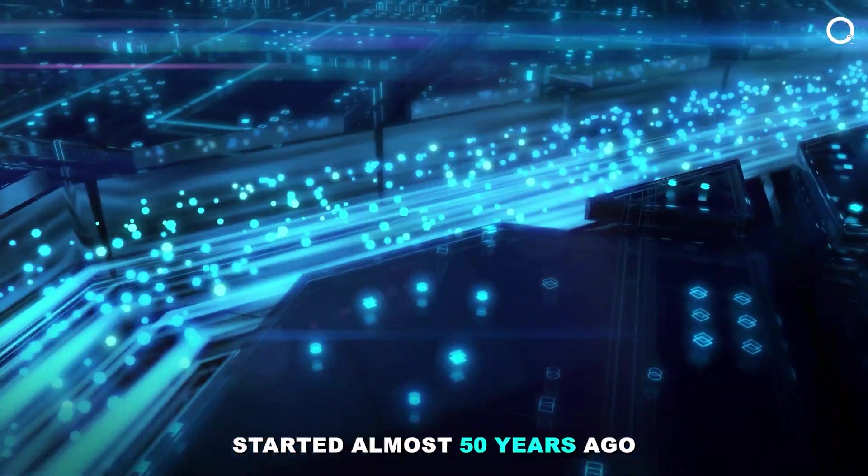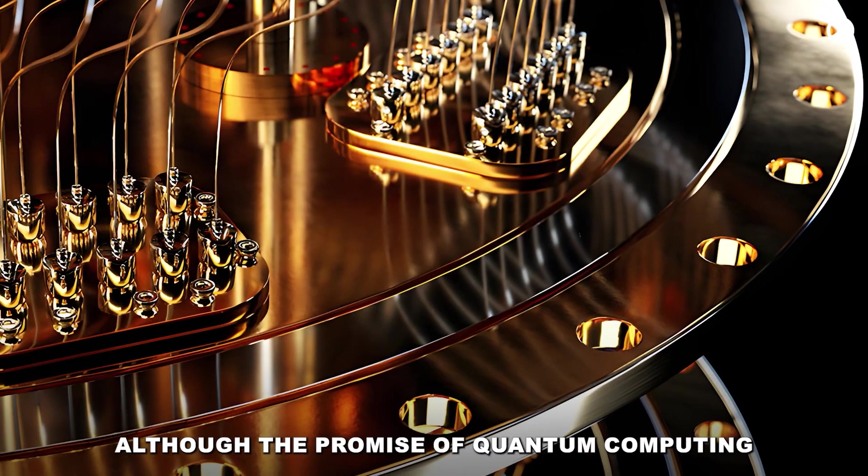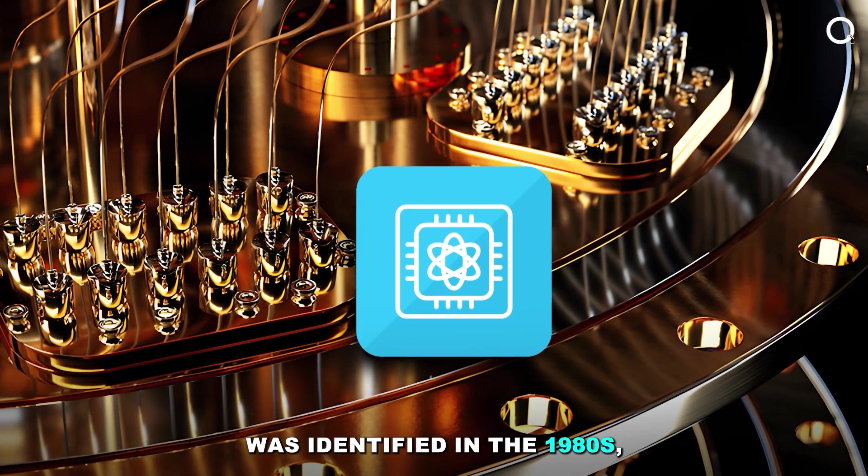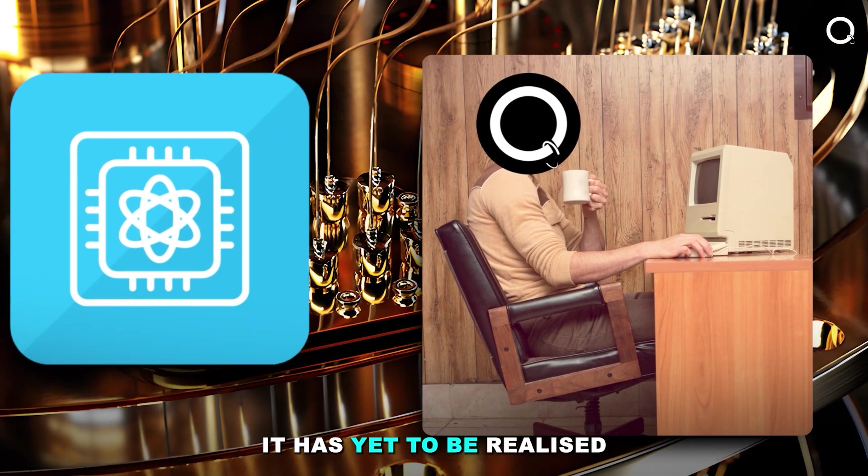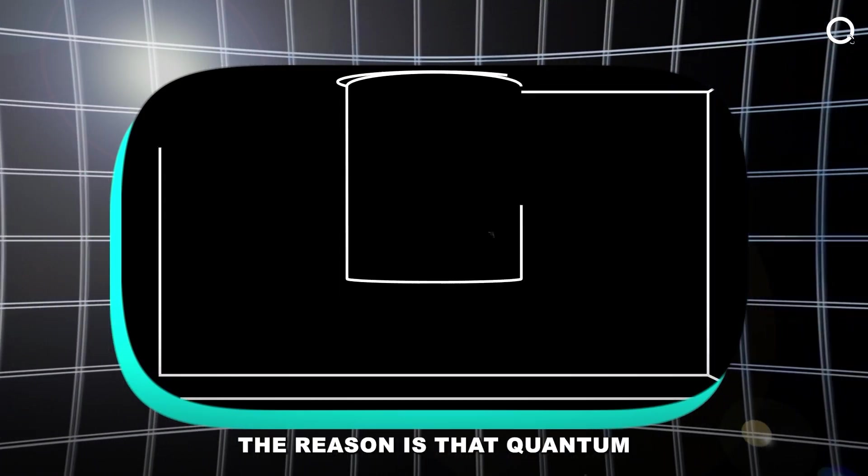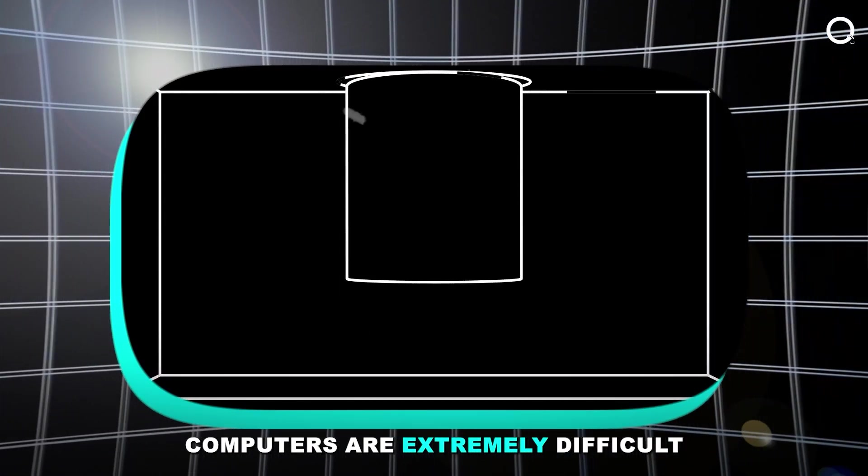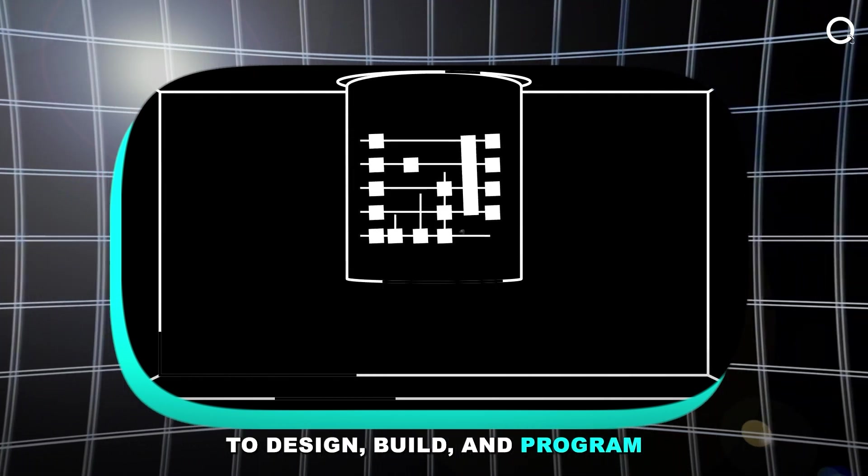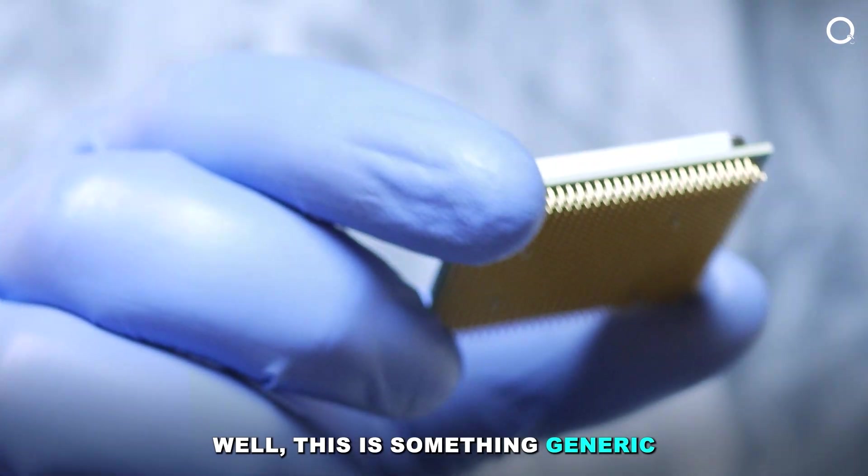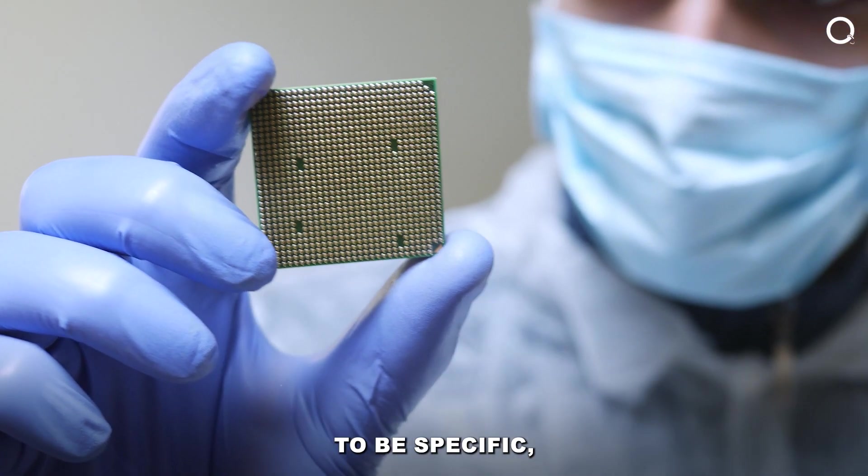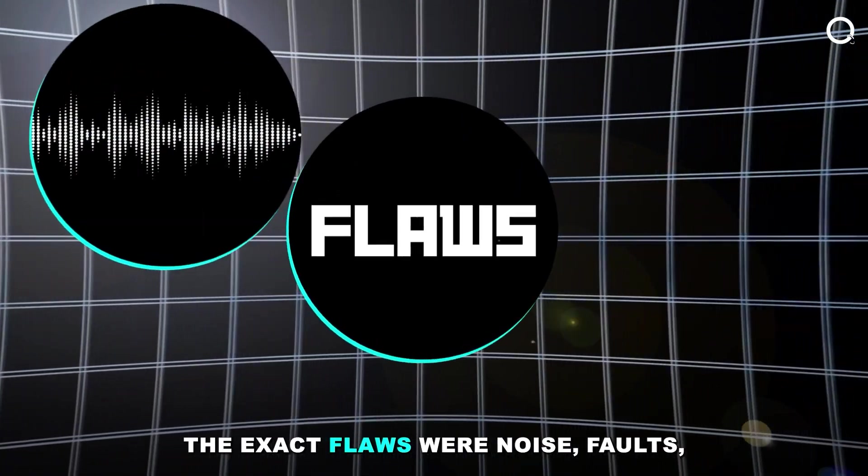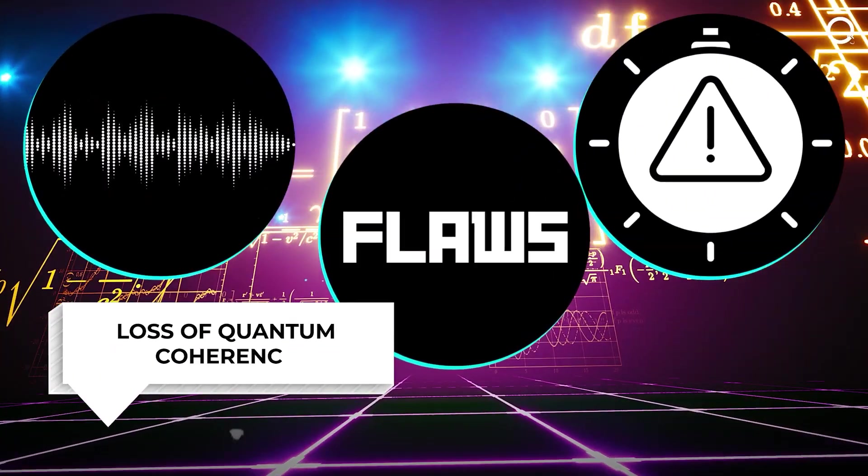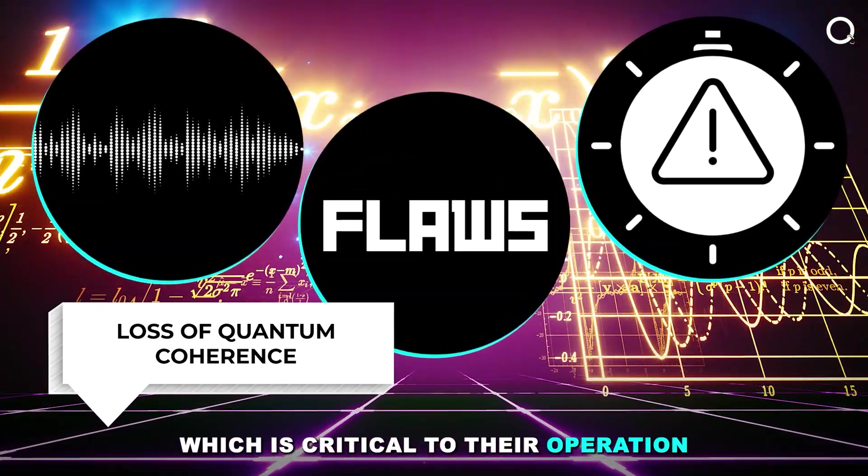The first hurdle of this journey started almost 50 years ago. Although the promise of quantum computing was identified in the 1980s, it's yet to be realized. The reason is that quantum computers are extremely difficult to design, build, and program. To be specific, the exact flaws were noise, faults, and loss of quantum coherence, which is critical to their operation.